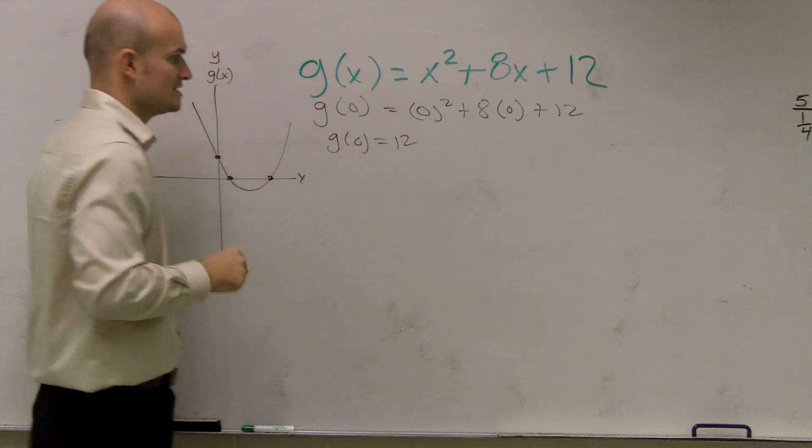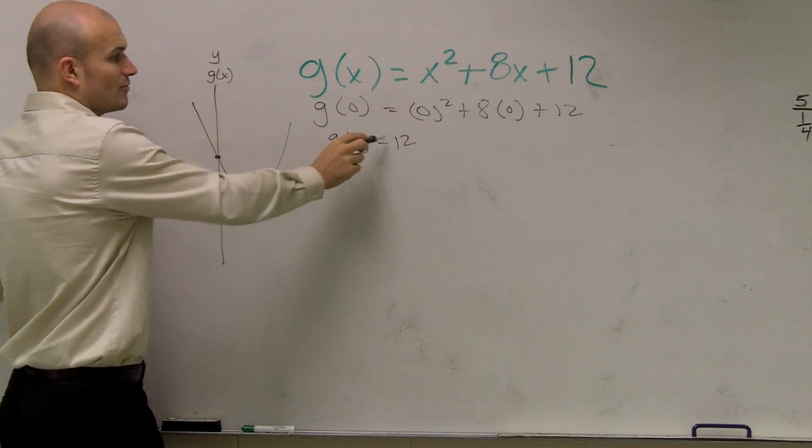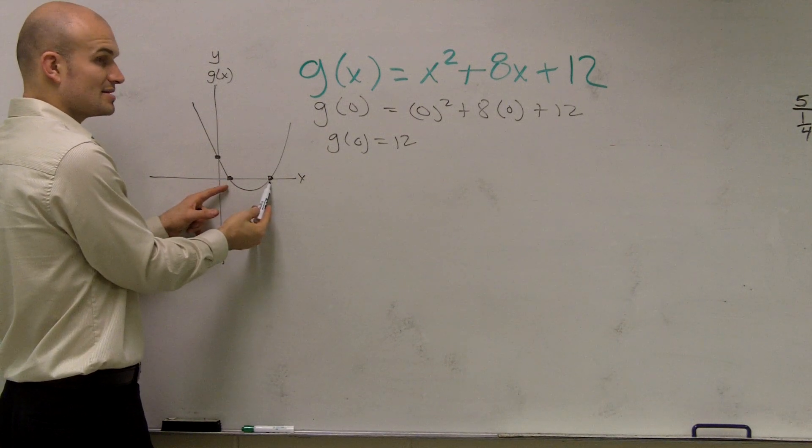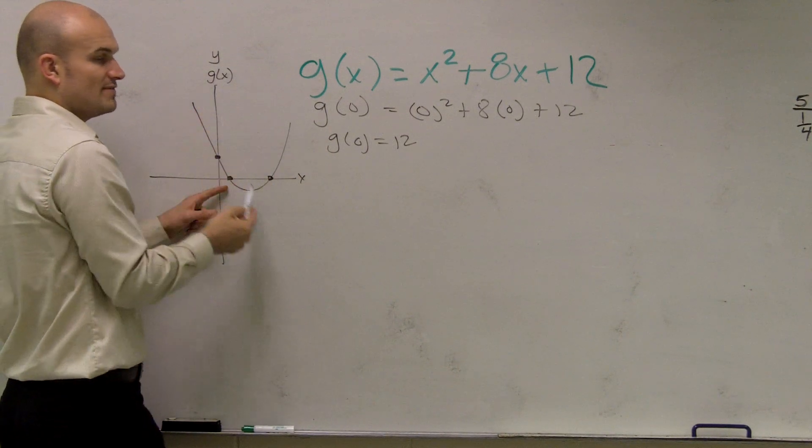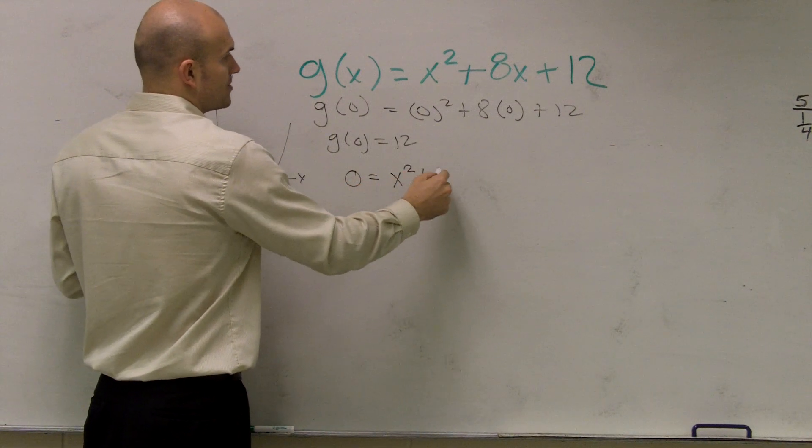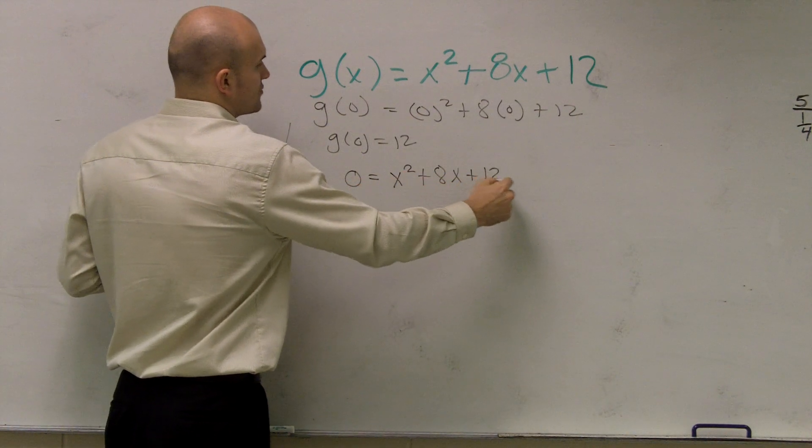You could say your y equals 12 is your y-intercept. Now, to find the x-intercept, it's a little more difficult. That is when g of x equals zero. So you say zero equals x squared plus 8x plus 12.